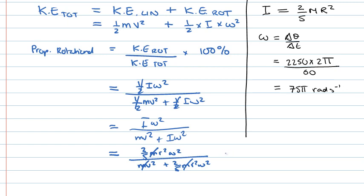At this point we can fill in our numbers. That becomes 2/5 times the radius squared, which was 0.035 squared, putting that into meters, times our angular velocity squared, divided by our linear velocity squared, which was 144 kilometers per hour. Let's turn that into meters per second.